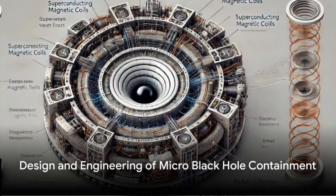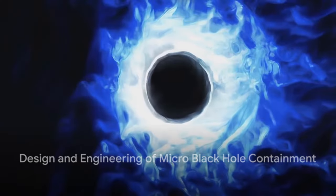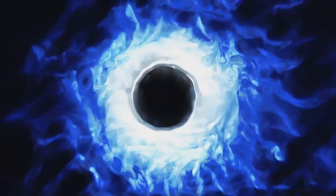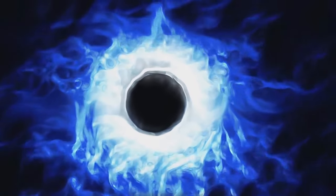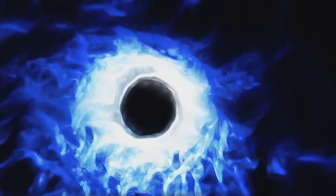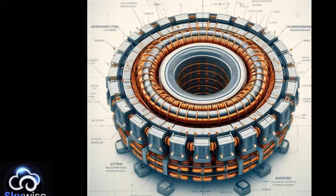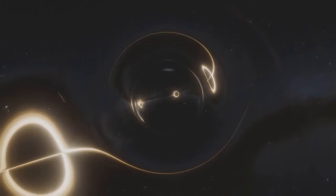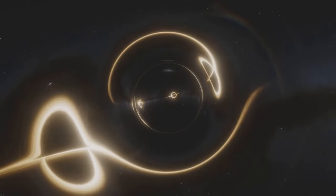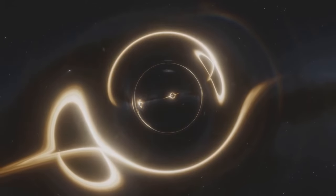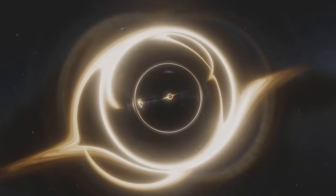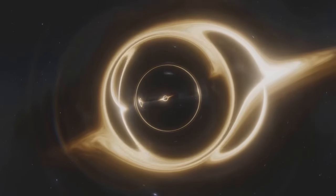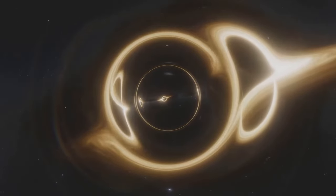The containment system designed to harness the power of micro black holes is a marvel of engineering. It involves a central vacuum chamber constructed from high-strength tungsten and graphene to isolate the micro black hole from external matter. Superconducting magnetic coils, configured in a toroidal or donut shape, generate intense magnetic fields, while high-strength materials provide robustness and minimal interaction with Hawking radiation.